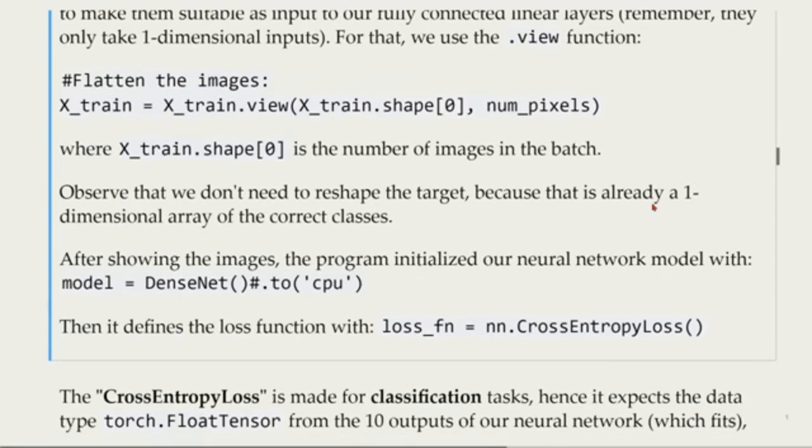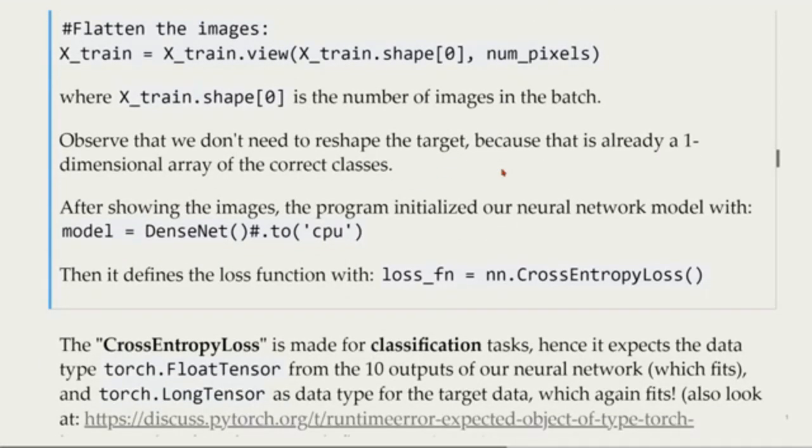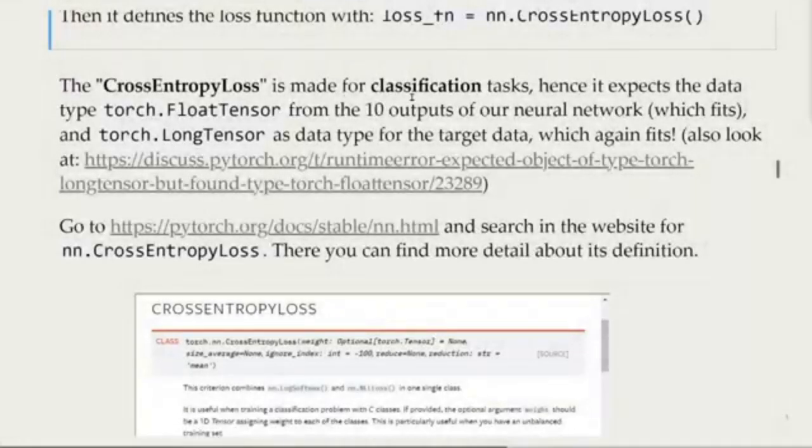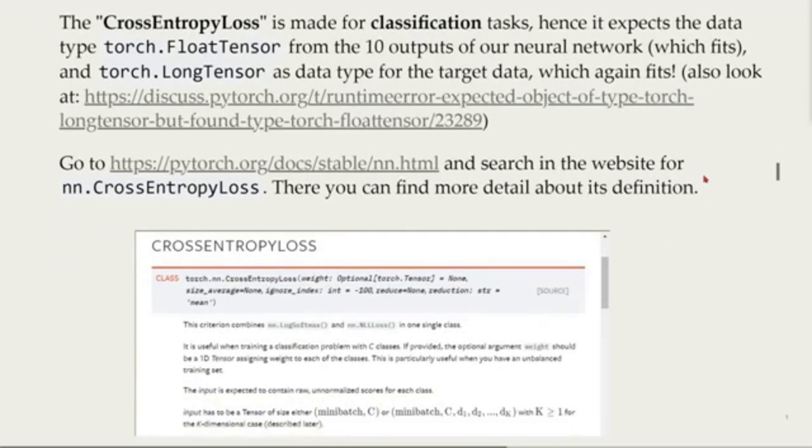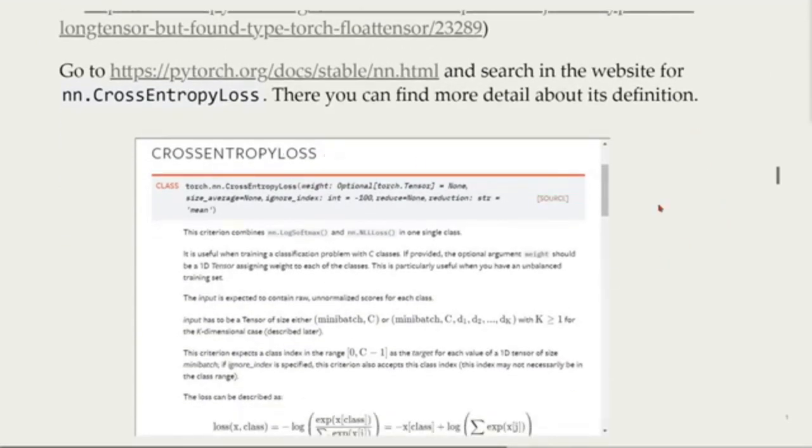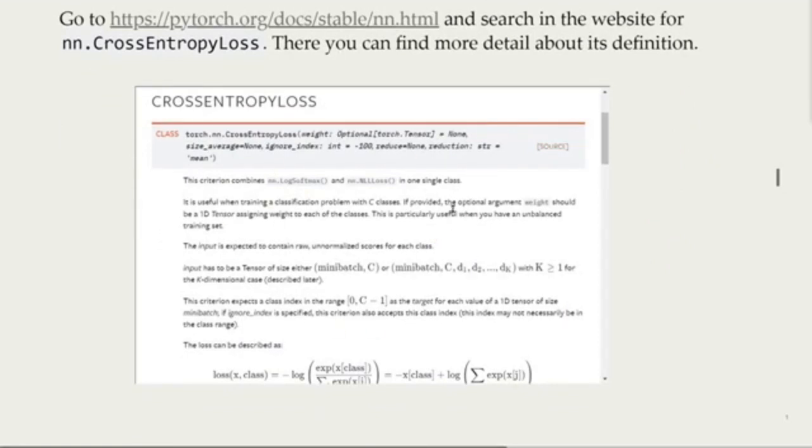After showing the images, the model is initialized with our neural network model. Then we will define the loss function using the cross-entropy loss. The cross-entropy loss is made for classification tasks and it expects the data type as a Torch float tensor from the 10 outputs of our neural network, which fits, and Long tensor as the data type for the target data, which also fits. You can go to the PyTorch documentation and search for cross-entropy loss to find more details about its definition.